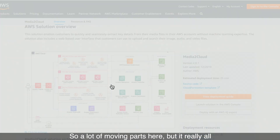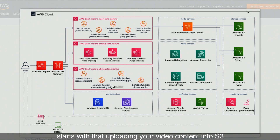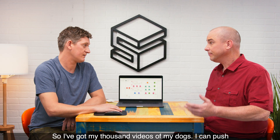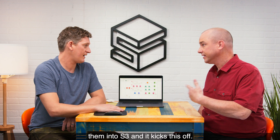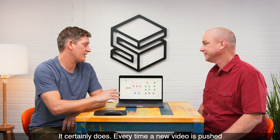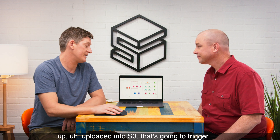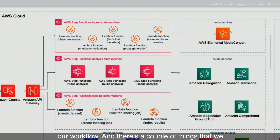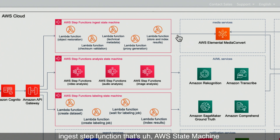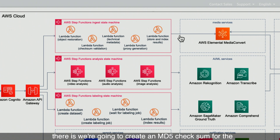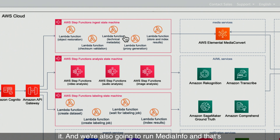So, a lot of moving parts here, but it really all starts with uploading your video content into S3. If I've got my thousand videos of my dogs, I could push them into S3 and it kicks this off. Every time a new video is uploaded into S3, that's going to trigger our workflow. The first thing is we have an ingest step function — that's an AWS state machine backed by AWS Lambda. We're going to create an MD5 checksum for the video file, so we have details on the exact size of it, and we're also going to run MediaInfo, which will extract some meaningful metadata about our file.